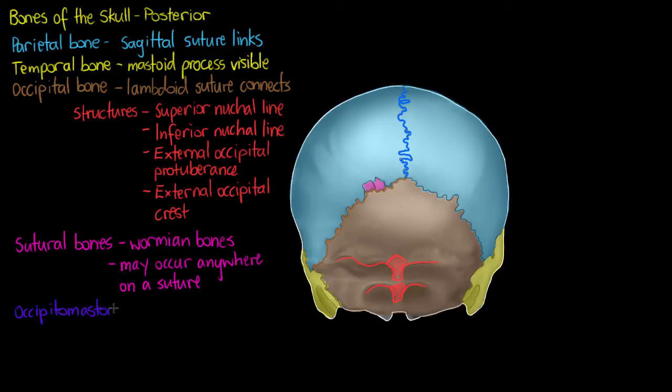Next we have our occipitomastoid suture. Now that's going to be the suture that connects our occipital bone and the temporal bone on both sides. So we can see that they're highlighted in the purple.